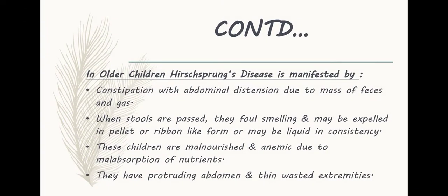Clinical features in older children: first is constipation with abdominal distension due to mass of feces and gas. When stools are passed, they are foul-smelling and may be expelled in pellet or ribbon-like form, or may be liquid in consistency. These children are malnourished and anemic because of malabsorption of nutrients, and they have a protruding abdomen and thin, wasted extremities.